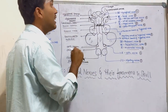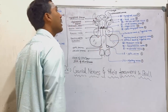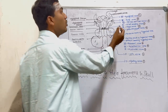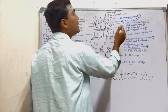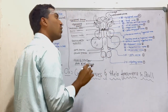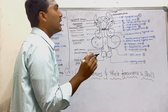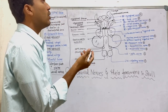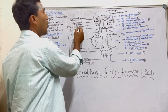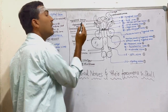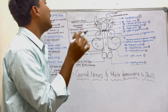Coming to the eighth cranial nerve, that is the vestibulocochlear nerve — it does not arise from the cranial cavity directly. It lodges in the internal acoustic meatus, which contains the internal ear.